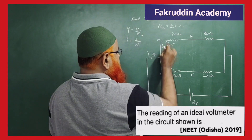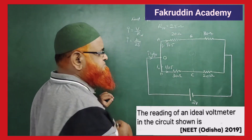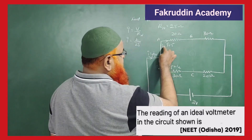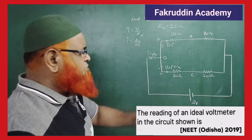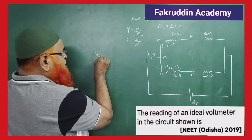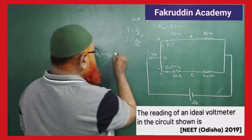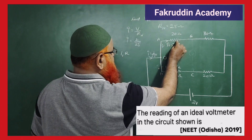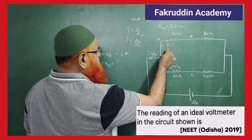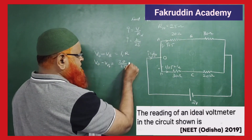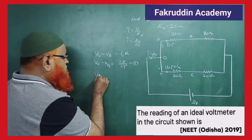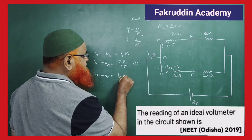Let I1 and I2 be the currents in each branch — both are equal at 1/25 A. Now we can solve in just one step. V0 minus VB equals I1 into R, which is 1/25 into 20, giving 20/25. Let this be equation 1. Then V0 minus VC equals I2 into R, which is 1/25 into 30, giving 30/25. Let this be equation 2.